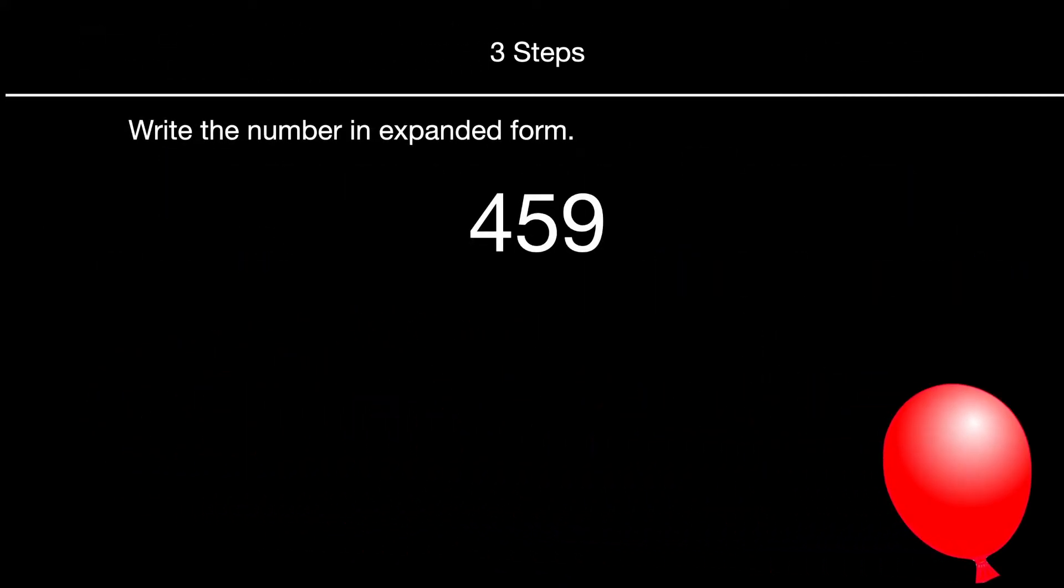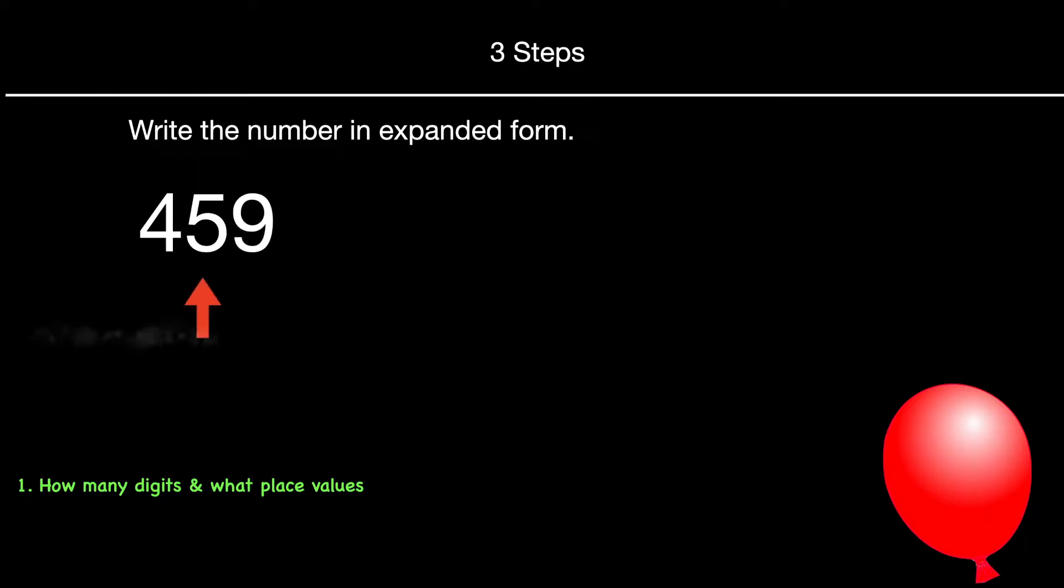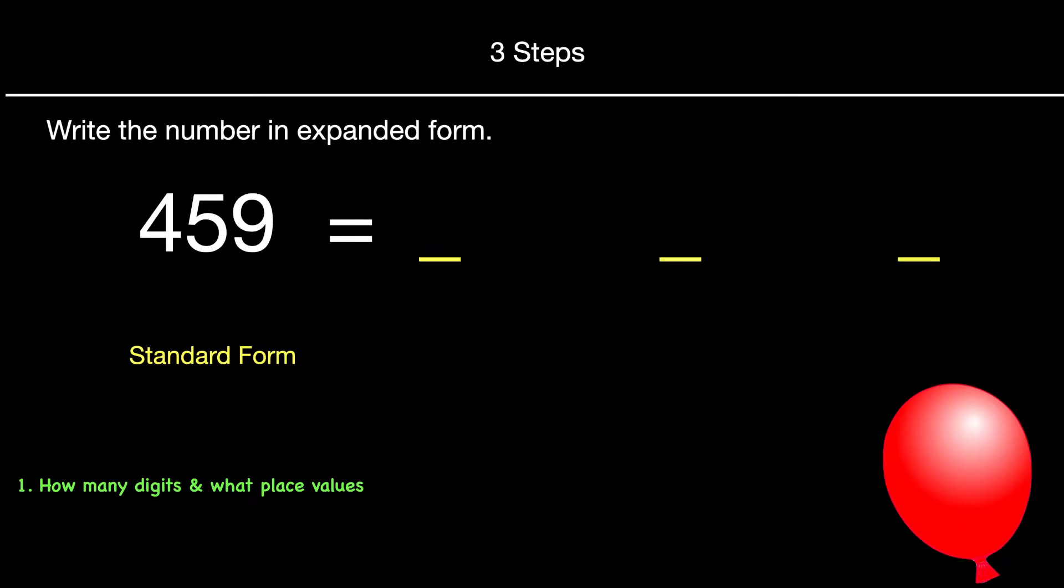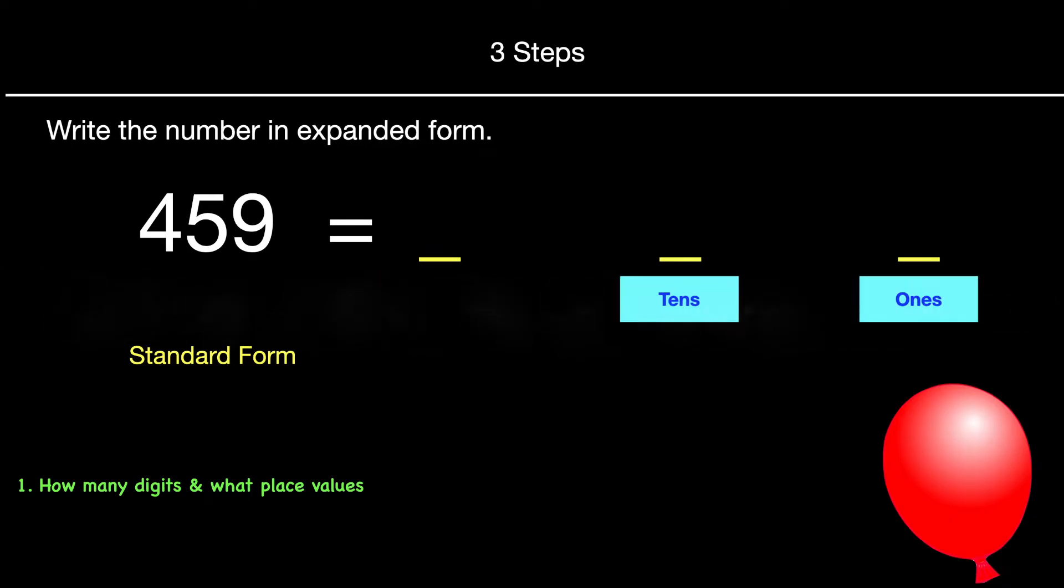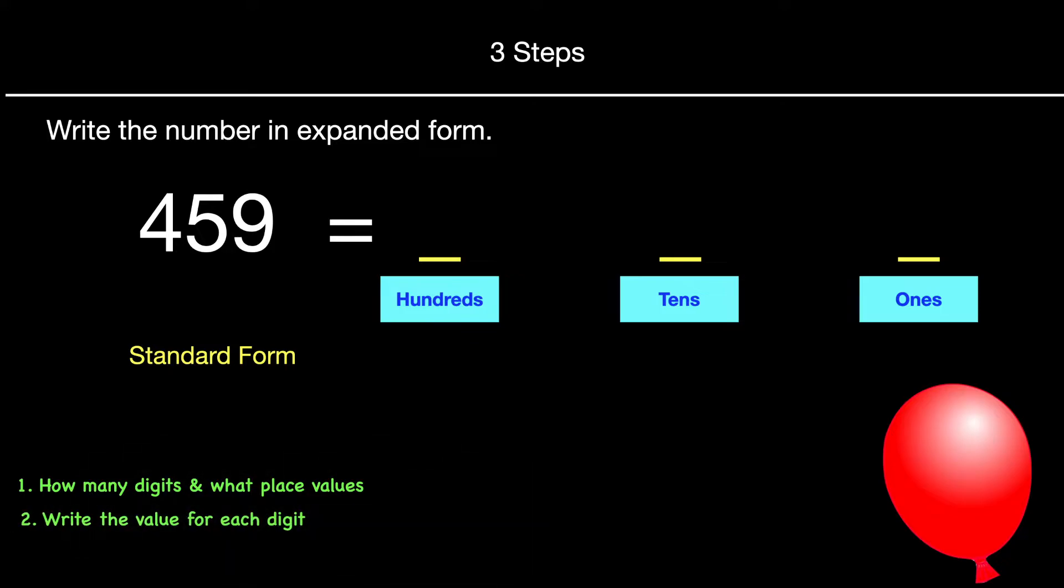Let's go over our three steps. Write the number in expanded form. So the first step is to figure out how many digits there are and what place value. So 459 is in standard form right now, and it has a total of three digits. The place values for those three digits would be ones, tens, and hundreds. So that way we'll know what value each digit has.